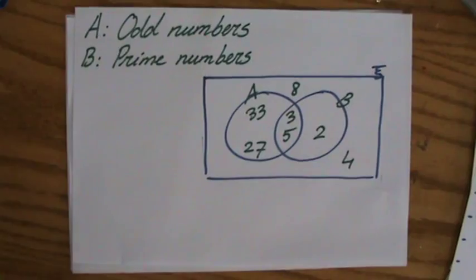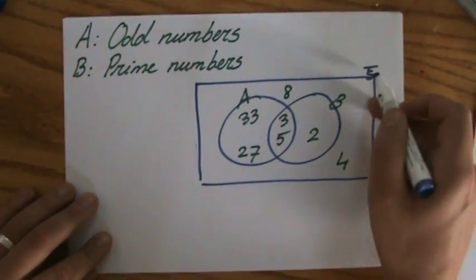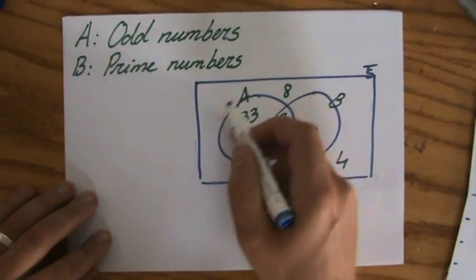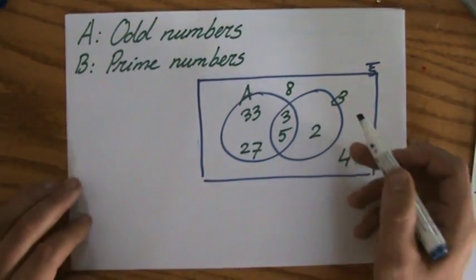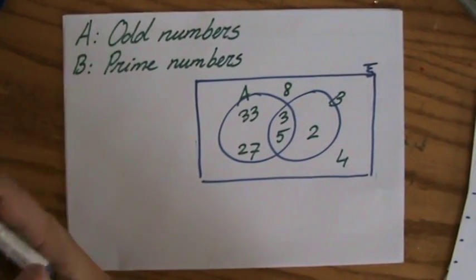So I prepared this for you where I have the universal set and then I have two sets in it, set A and set B. And a set is nothing more than just a group of objects and symbols.